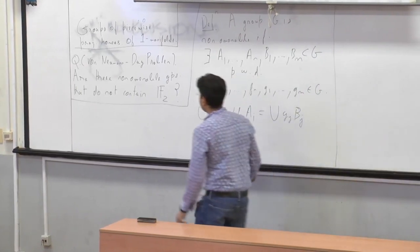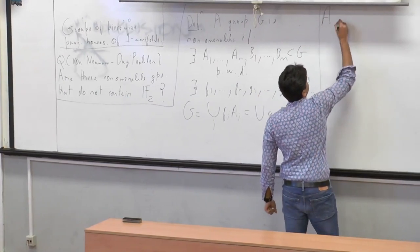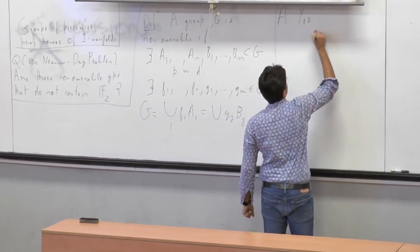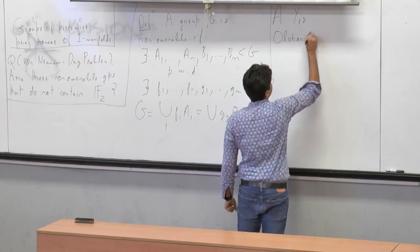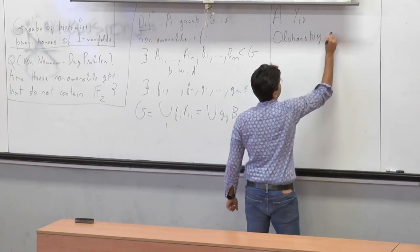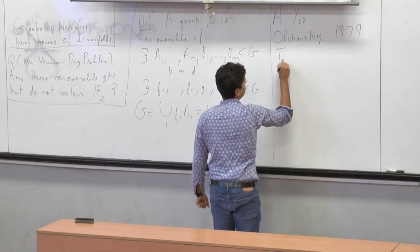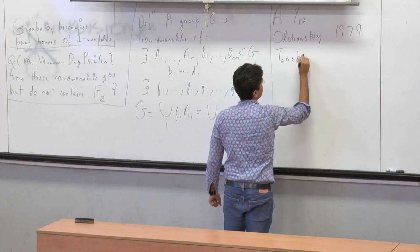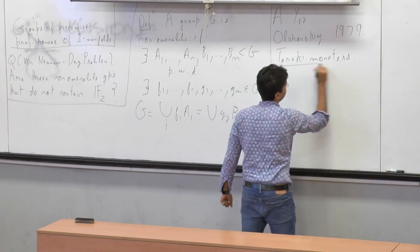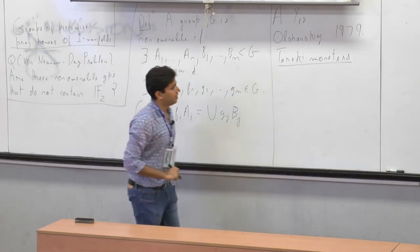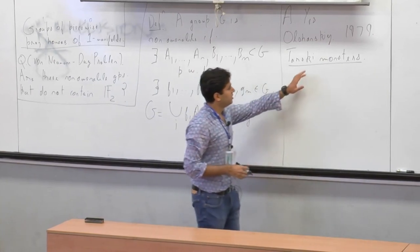The Von Neumann-Day problem was solved — the answer is yes. It was solved by Olshansky in 1979, who constructed Tarski monsters. These are finitely generated infinite torsion groups; hence they cannot contain free subgroups. And Olshansky proved that they are non-amenable.